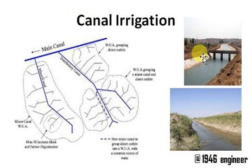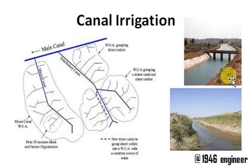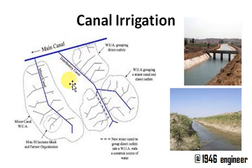Canal irrigation is a very important part of irrigation. It is a major source of irrigation in agricultural countries. These two are examples of how canals look like — this is a lined canal and this is an unlined canal. Here is the layout of how the canal is subdivided into its branches.